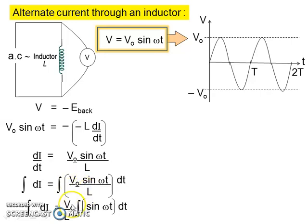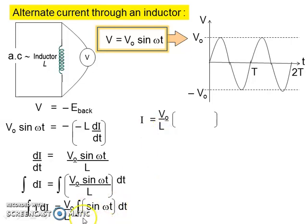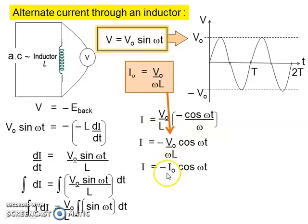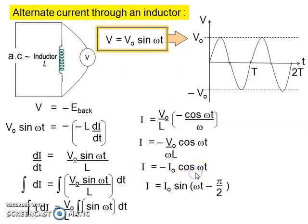V0 and L are constant, so we bring them to the front, leaving the integral of sine omega T with respect to T. The integration of 1 with respect to I is I, and V0 per L is constant. The integration of sine omega T with respect to T gives us negative cos omega T per omega. V0 divided by L omega equals I0. So we get I equals to negative I0 cos omega T. Using the sine form, we get I equals to I0 sine of (omega T minus pi per 2), because cos omega T equals sine (omega T minus pi per 2). This is a mathematics rule, and the graph is a cosine graph.